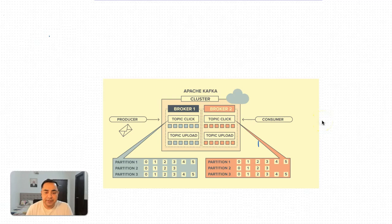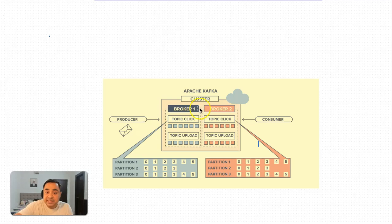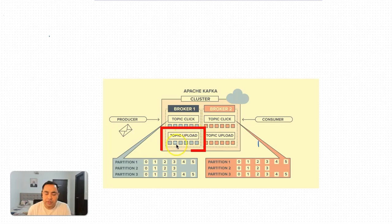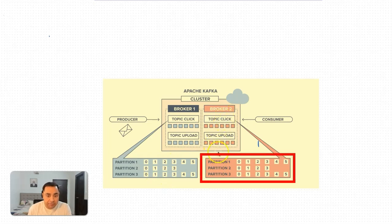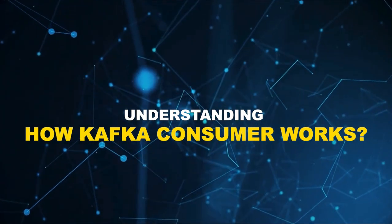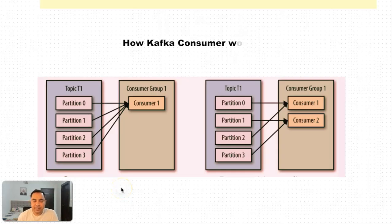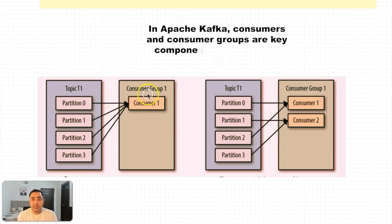To recap: the producer writes data, the broker is where the actual data gets stored. For example, there's a topic called 'click' where data is stored with its partitions and messages, and similarly another topic called 'upload' where data is stored with its own partitions.